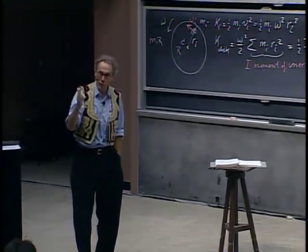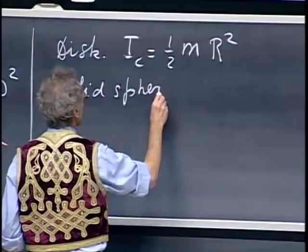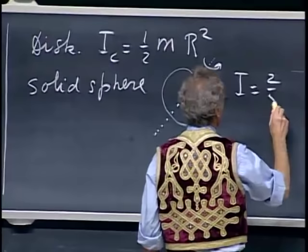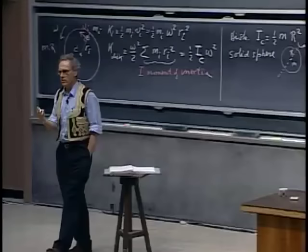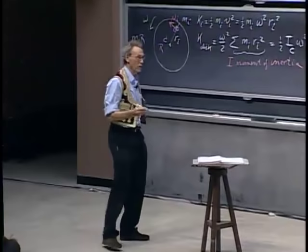If we had a solid sphere and rotated it about an axis through its center, the moment of inertia equals two-fifths m r-squared, where r is the radius and m is the mass of the sphere. My research is in astrophysics — I deal with stars, and stars have rotational kinetic energy. We'll get back to that today. This is the one moment of inertia that I do remember.